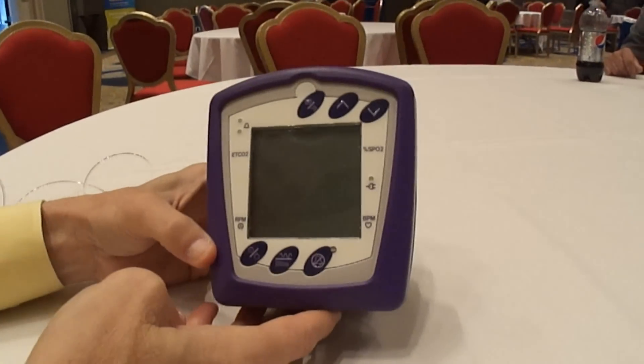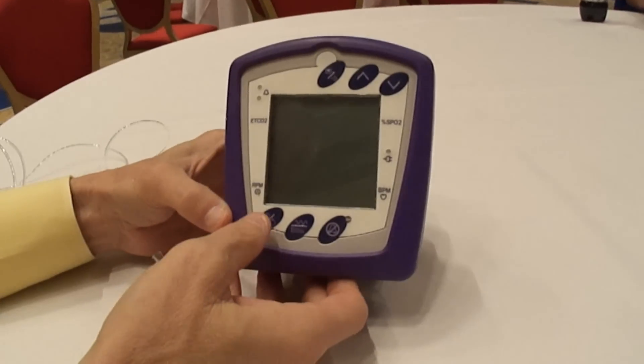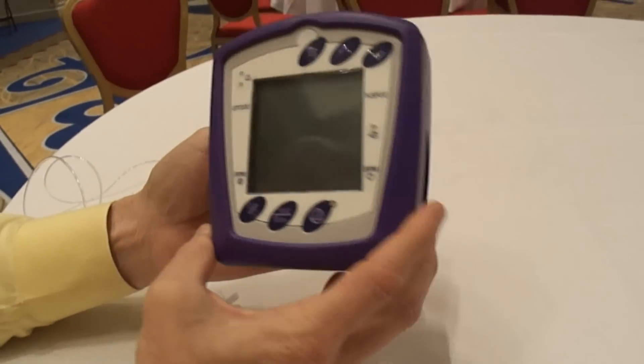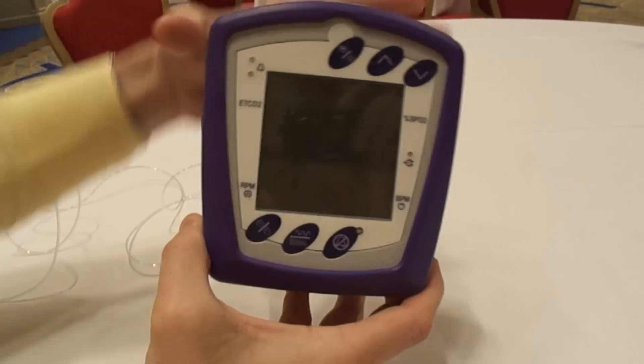This is the Capnocheck 2, an end-tidal CO2 monitor from BCI. Basically, there's a couple things to the unit. The unit comes like this with a purple rubber boot on it.